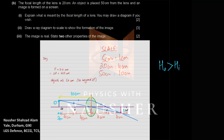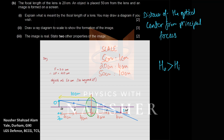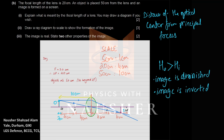Focal length is the distance from the optical center to the principal focus. After the scale drawing, you can identify that the image is diminished (smaller in size) and inverted (pointing opposite to the object). This is the case for both the human eye and the camera lens.